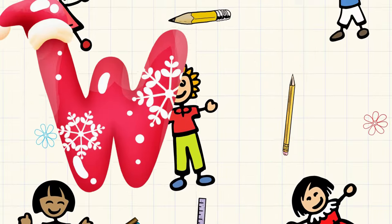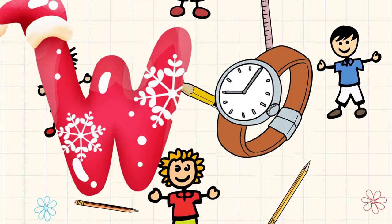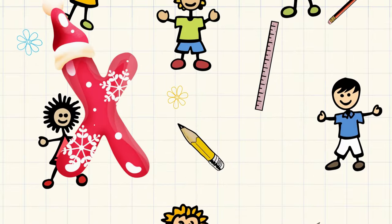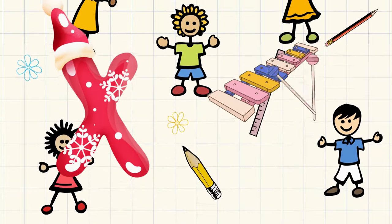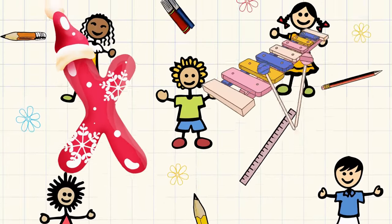W is for watch, w-w-watch. X is for xylophone, x-x-xylophone.